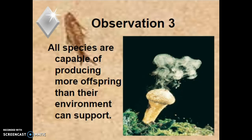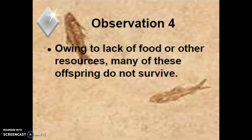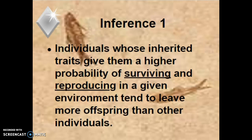Observation three: all species are capable of producing more offspring than their environment can support. Observation four: some survive, some don't. If you have too many offspring, some are going to make it and some are not — owing to lack of food or many predators. The inference that follows is that individuals who have inherited traits giving them a higher probability of surviving and reproducing tend to have more offspring than other individuals.